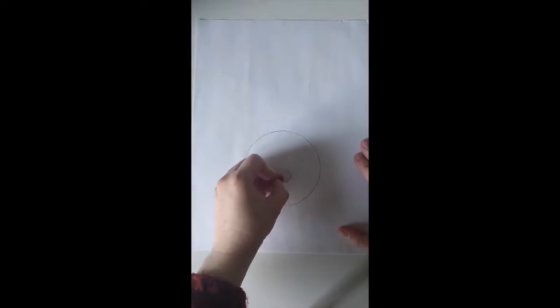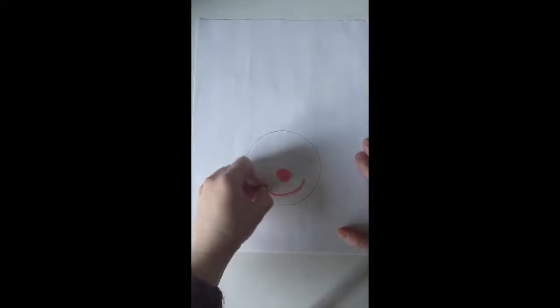And now we can draw a clown's face. So every clown that I've seen has a big red nose, color that in, and a big red smile. So you can even make it bigger.